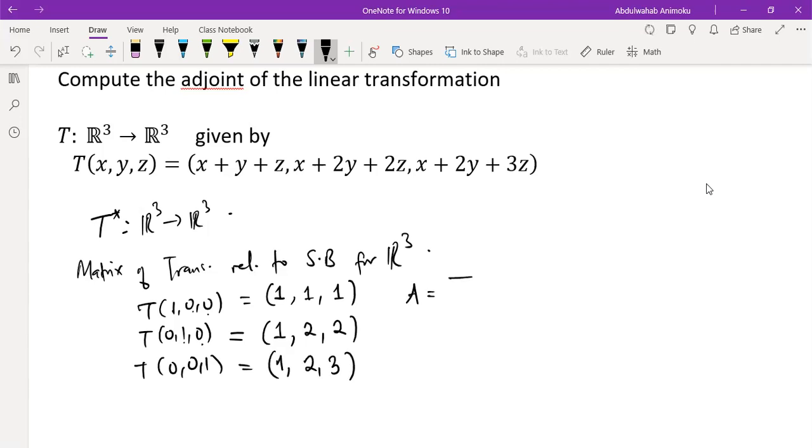Therefore we can write the matrix of transformation. Since we are using standard basis, we're just going to write the rows of these vectors as a column in this matrix. So this will be 1, 1, 1. The next one will be 1, 2, 2. And the third row will be 1, 2, 3.